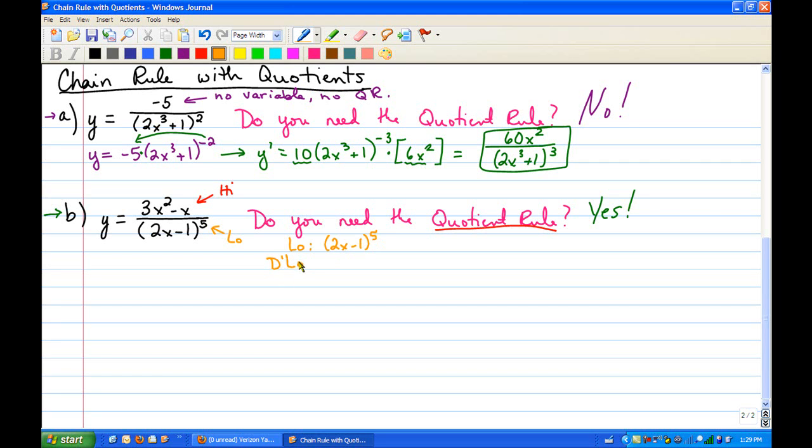d low is its derivative, so that requires chain rule, five times 2x minus 1 to the fourth, times the derivative of the inside is 2. So d low is going to be 10 times 2x minus 1 to the fourth. Then we move to our high. High is 3x squared minus x, and d high is 6x minus 1.